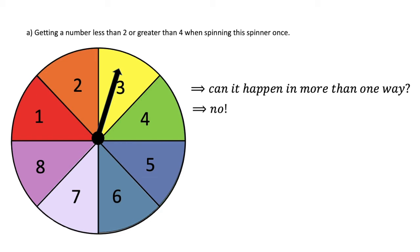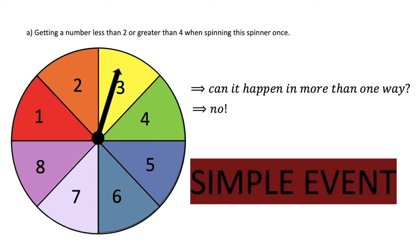The number is either less than 2, between 2 and 4, or greater than 4. And so we see that this is a simple event.